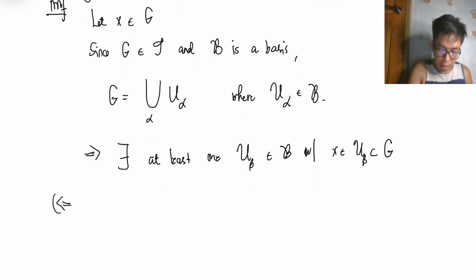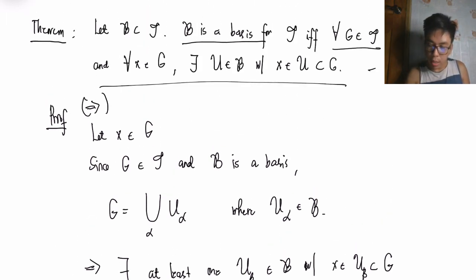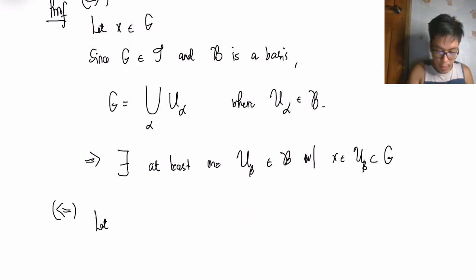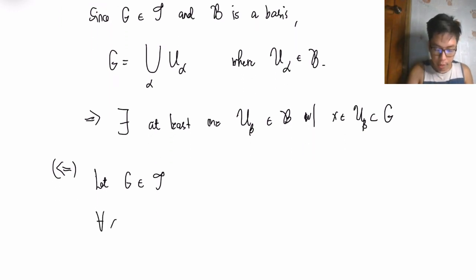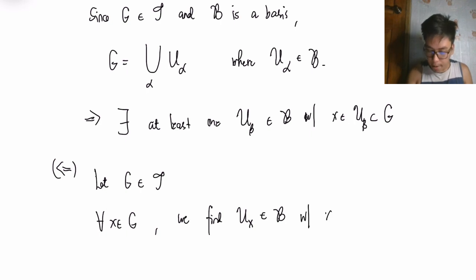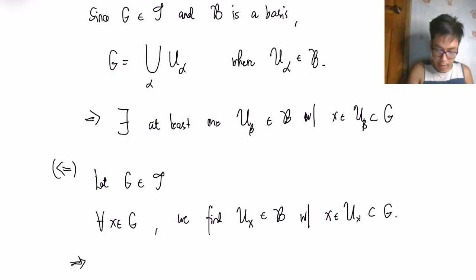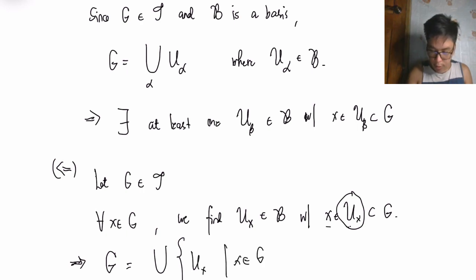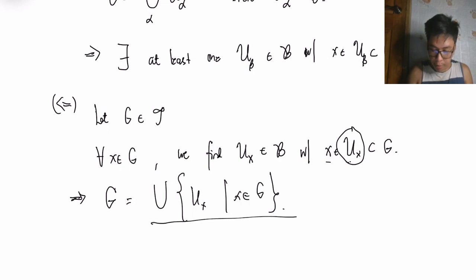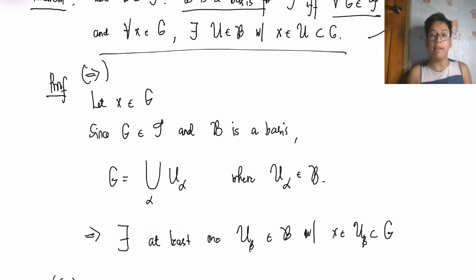For the backward direction: suppose the condition holds. Let G be in tau. Then for every x in G, we can find U_x in script B with x ∈ U_x and U_x ⊆ G. This implies G equals the union of all U_x for x in G. Since each U_x is in script B, this represents G as a union of basis elements. Therefore script B is a basis.